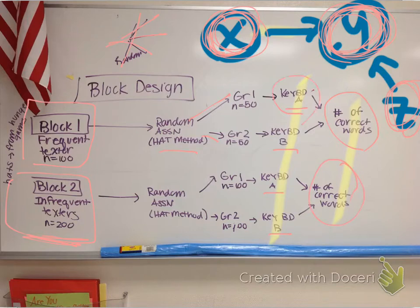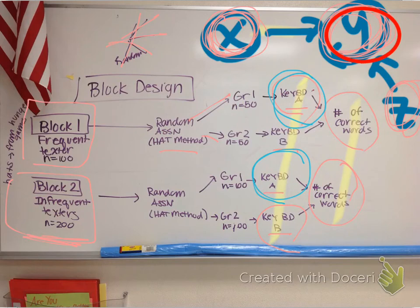We said, what if keyboard A wins in the frequent texter group, and keyboard B wins in the frequent texter group? Well, then we have insufficient evidence. But, if keyboard A won in the first, in the block one, and keyboard A won also, by a landslide, significantly in both groups, we can almost certainly say that the response, the number of correct words, is because of keyboard A. And not because of that lurking variable. And that's the purpose of a block design.